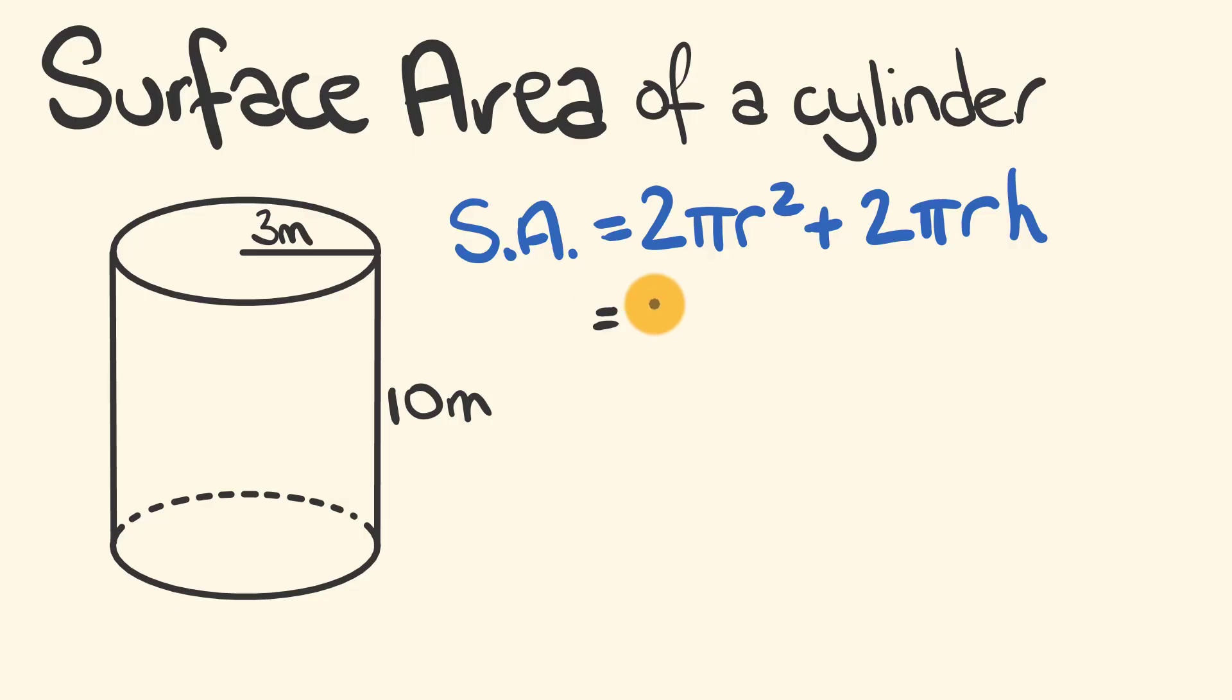Alright, so first off we have 2 pi. Let's just leave pi how it is for a minute. And this is being multiplied by the radius squared. The radius is equal to 3, so this is 3 squared. We're going to add 2 pi times the radius, which is 3, times the height, which is 10.